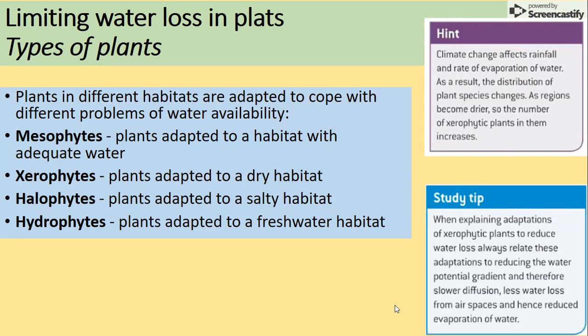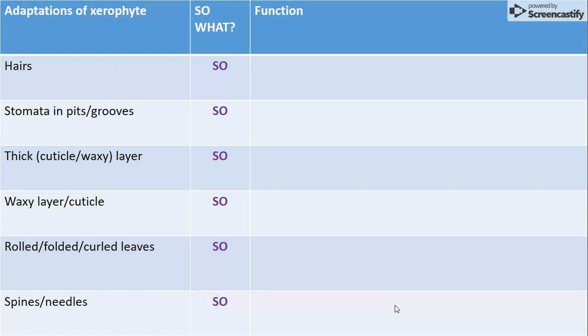In terms of limiting water loss in plants, it's quite different. There are different types of plants because they live in different habitats. We've got mesophytes, which live in habitats with enough water. Xerophytes, which are adapted to live in dry habitats. Halophytes, which are able to survive in salty habitats. And hydrophytes, which are adapted to freshwater habitats. We're going to be looking at the adaptations of xerophytes because that's what the specification asks you to do.